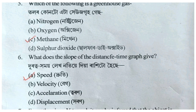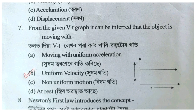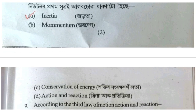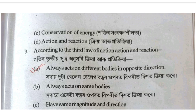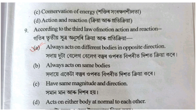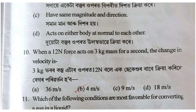Which of the following does the slope of the distance-time graph give? From the given velocity-time graph it can be inferred that the object is moving. According to the third law of motion, action and reaction act on different bodies in opposite directions.